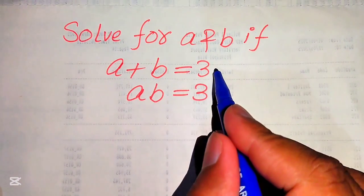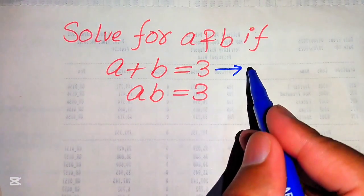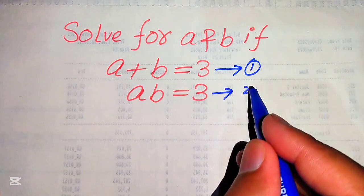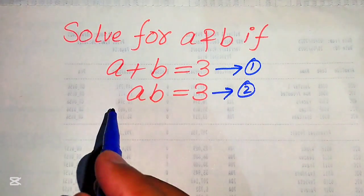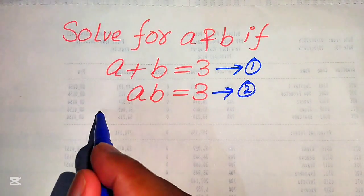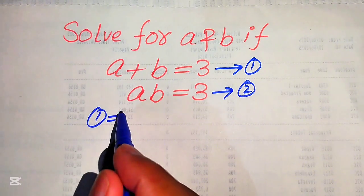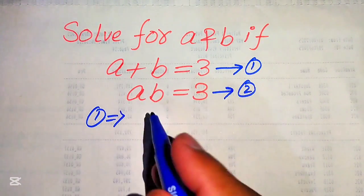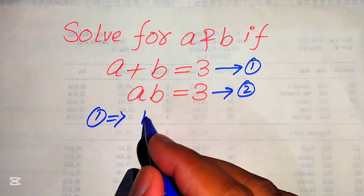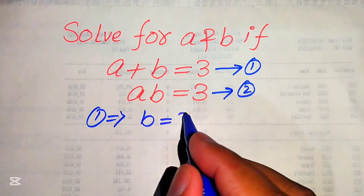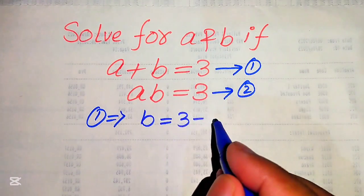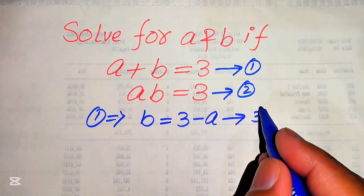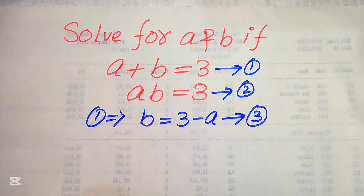We call A plus B equals 3 equation number 1 and AB equals 3 equation number 2. Focusing on equation number 1, we move A to the right hand side and get B equals to 3 minus A, and we call this equation number 3.